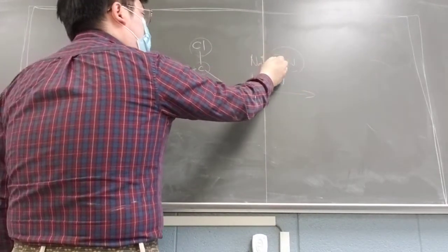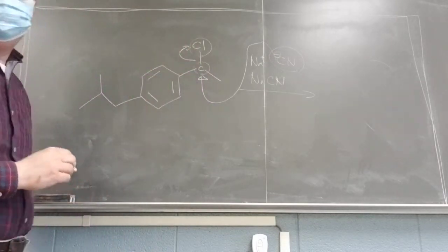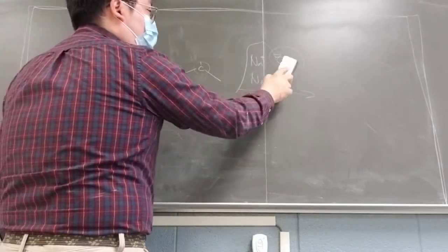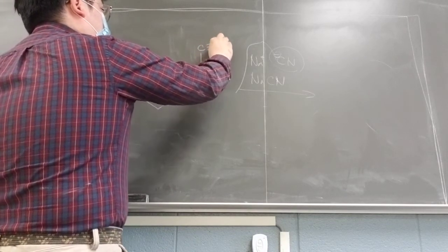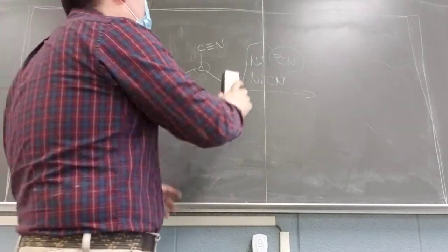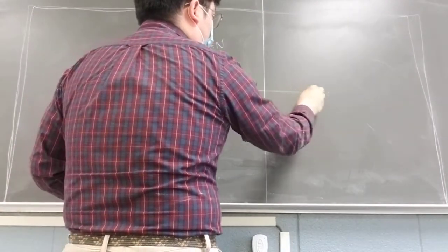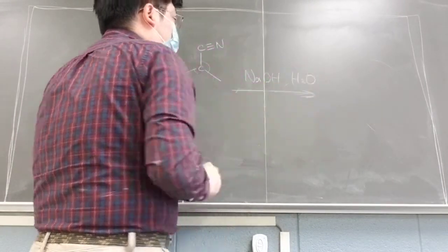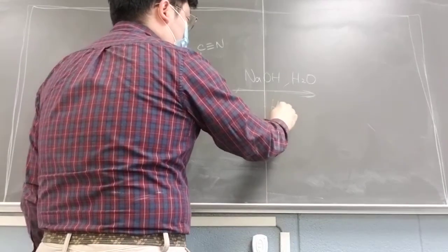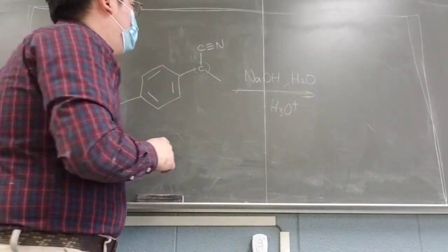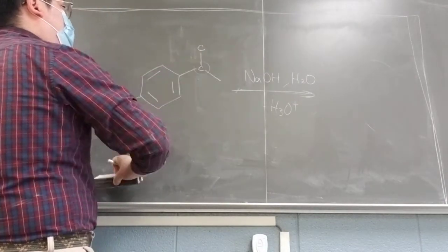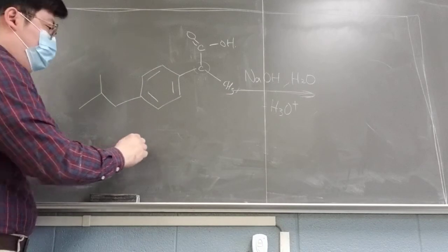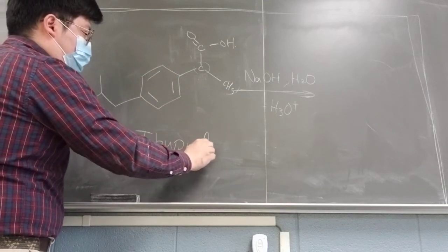We're going to have this one and leave. So if you treat it with sodium cyanide, the halogen group will leave and you get the nitrile product. And then what you can do is treat it with a very strong base — sodium hydroxide and a little bit of water. And then later you can treat it with some acidic conditions. So eventually what happens is you're going to have a carboxylic acid.